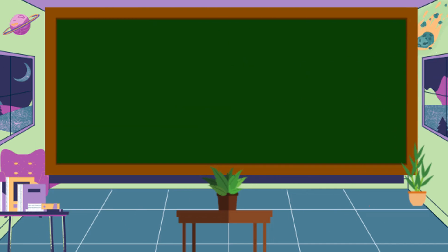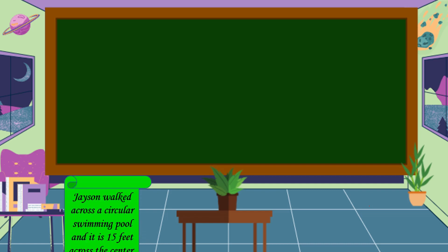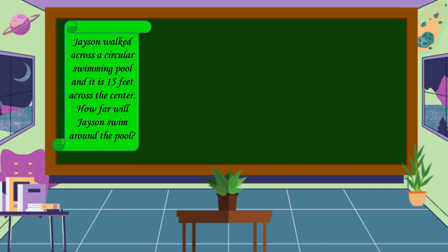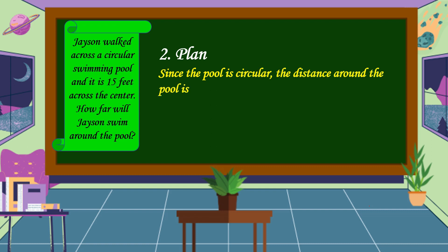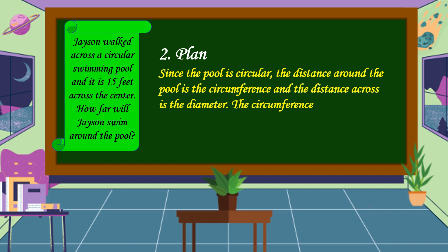We understand the problem. The next step is we are going to make a plan. Since the pool is circular, the distance around the pool is the circumference, and the distance across is the diameter. The circumference is unknown and the diameter is equal to 15 feet. Then, let's solve for C, or let's find the circumference.